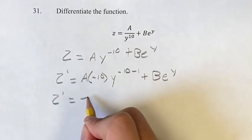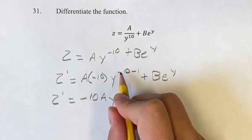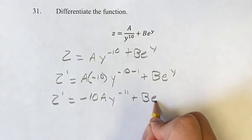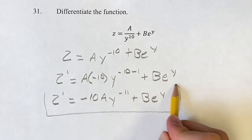Simplifying this, A times negative 10 is negative 10A, y to the negative 10 minus 1 is negative 11, plus B e to the y stays the exact same, and this is your final answer.